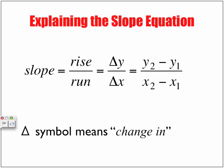Explaining the slope equation. Slope is equal to rise over run. We represent this using delta — a Greek symbol that means 'a change in.' So we read it as delta y over delta x, or the change in y over the change in x. This helps us identify the slope when we don't have a graph.